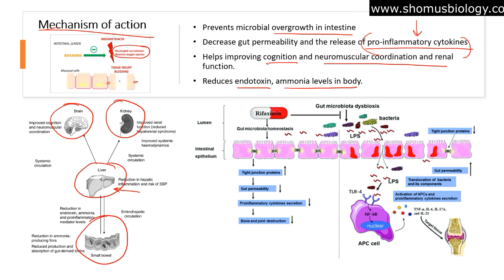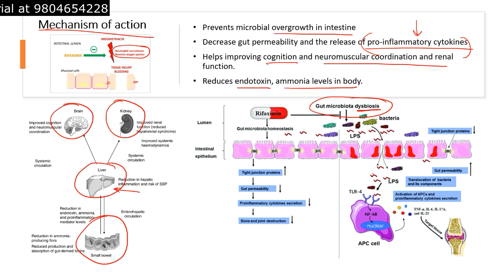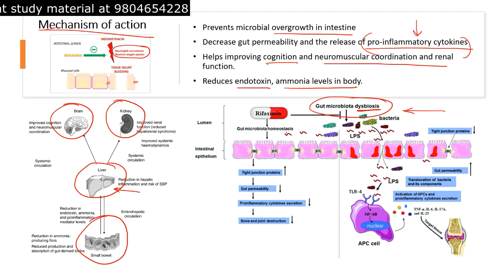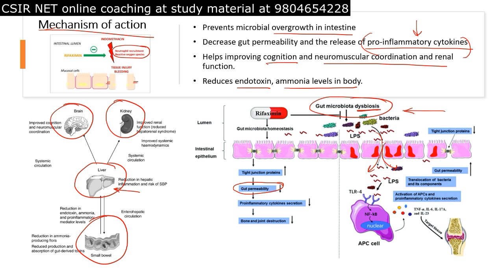Rifaximin also prevents gut microbiota dysbiosis — when bad microbes in the gut increase in amount compared to good microbes. Normally, good microbes are present in higher amounts, which is why eating yogurt with Lactobacillus species maintains a healthy gut. When foreign pathogens destabilize this balance, rifaximin strengthens tight junction proteins that stitch cells together side by side, reducing gut permeability. Normally, if tight junctions are weak, gut permeability increases and bacteria can pass through.